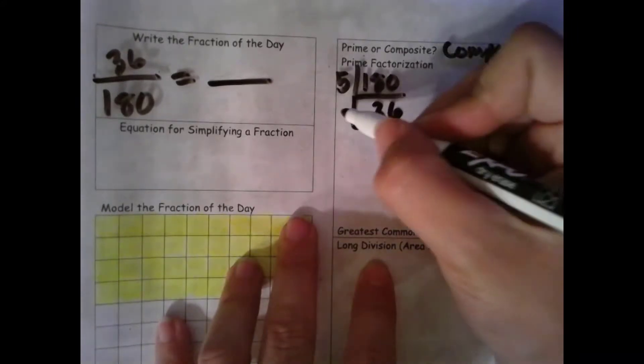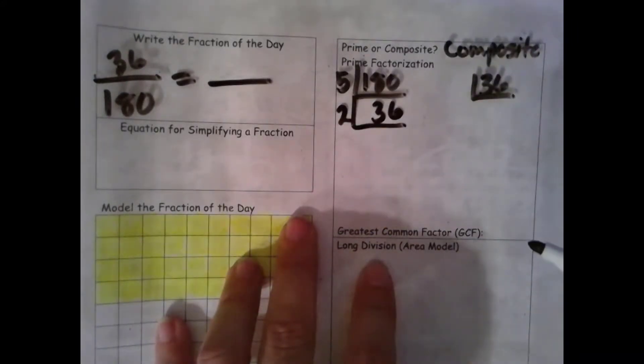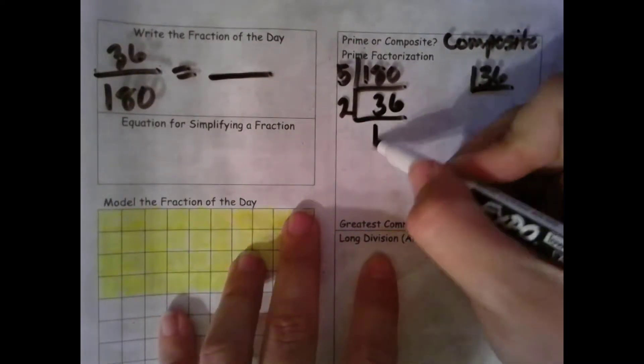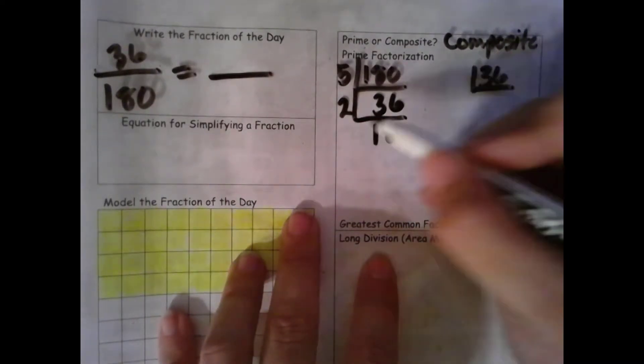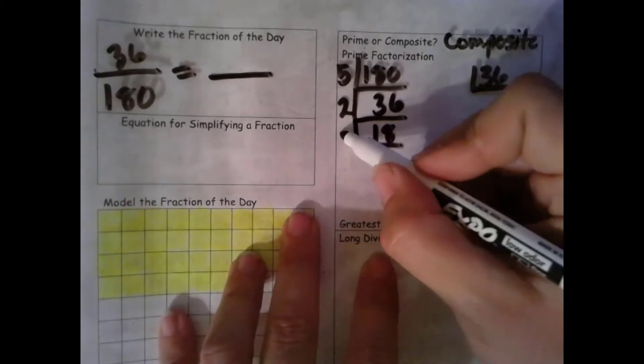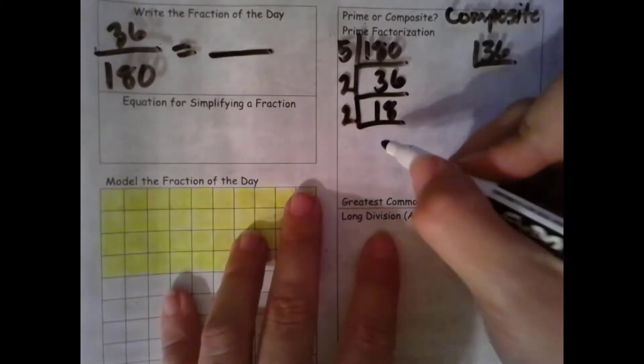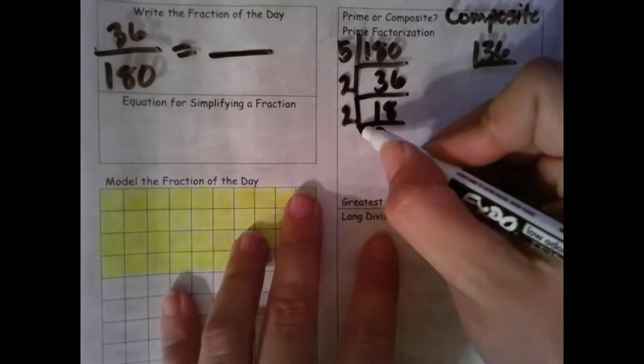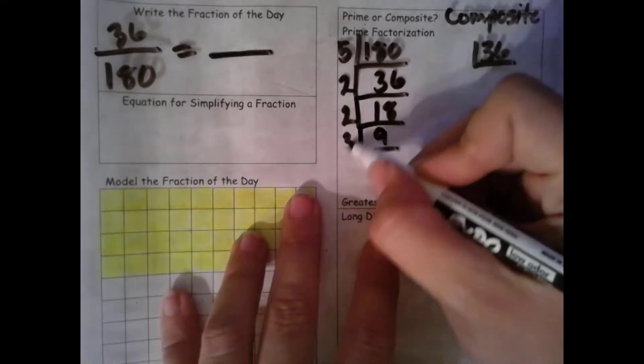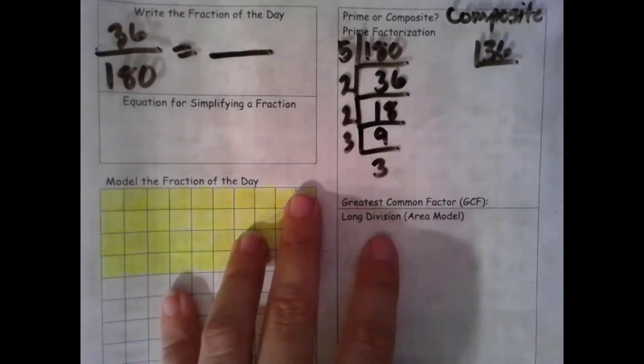36 is even, so I can divide by 2. Half of 36 is 18. That's even, so I can divide by 2. Half of 18 is 9. 9 can be divided by 3. I get 3. 3 is prime, so we are done.